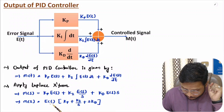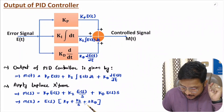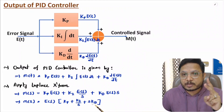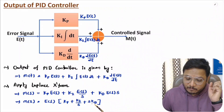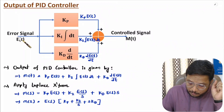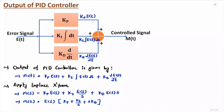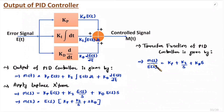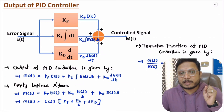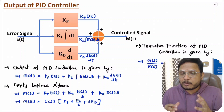Taking E(s) as common, in the bracket we have K_P plus K_I/s plus K_D·s. The transfer function of the PID controller is output divided by input, that is M(s) divided by E(s), which equals K_P + K_I/s + K_D·s.